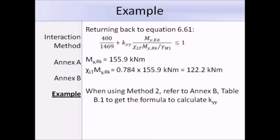We worked out MYRK as 155.9 kNm, and chi LT was 0.784 from the buckling resistance summary. Those two values multiplied by each other equals 122.2 kNm. We still need to get KYY.